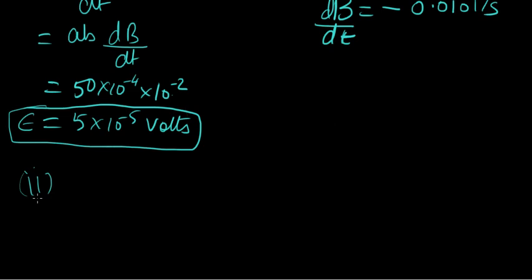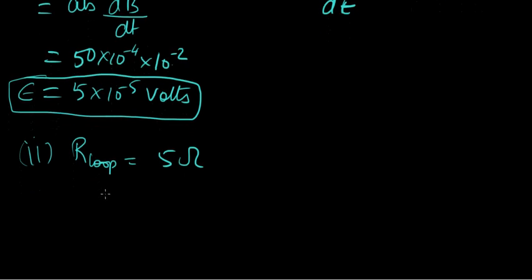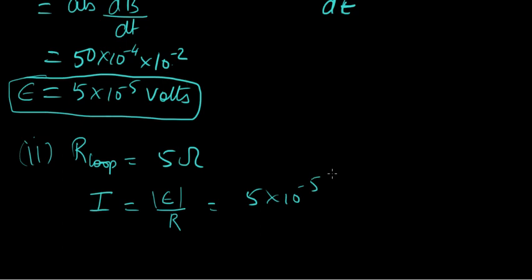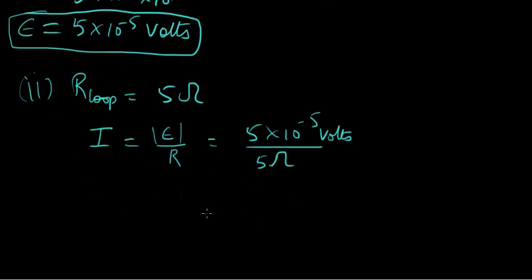The second part asks us to calculate the value of current induced in the circuit if the resistance of the loop is 5 ohms. This is pretty straightforward from Ohm's law: I = V/R. So it's 5×10⁻⁵ volts over 5 ohms, which gives us 1×10⁻⁵ amps. Let's not forget our units.